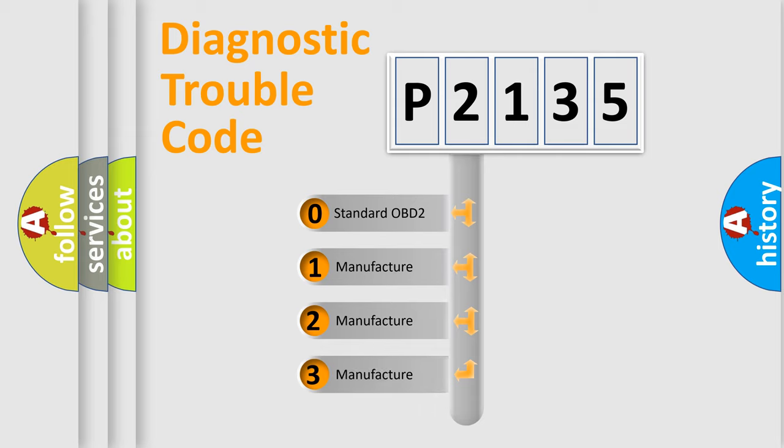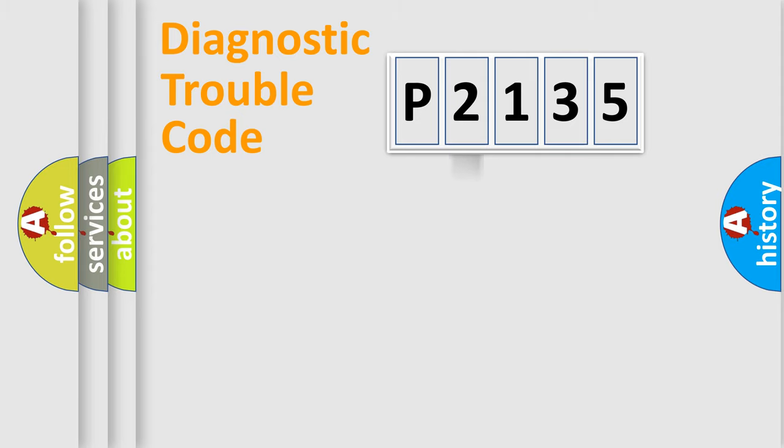If the second character is expressed as zero, it is a standardized error. In the case of numbers 1, 2, or 3, it is a more precise expression of the car-specific error.